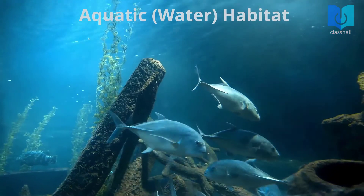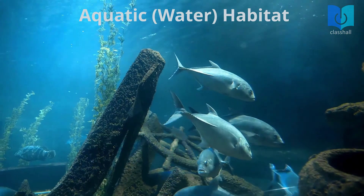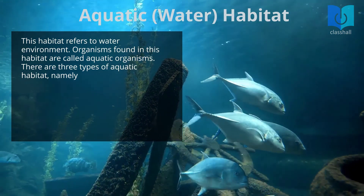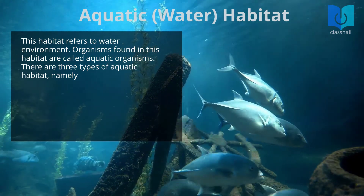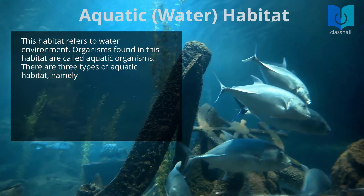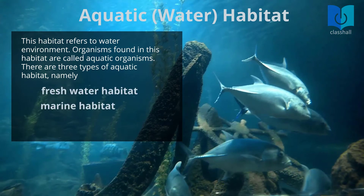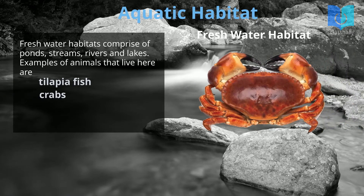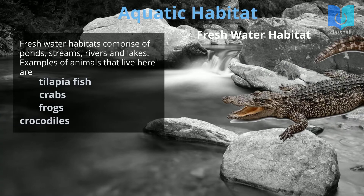One: aquatic or water habitat. This habitat refers to a water environment. Organisms found in this habitat are called aquatic organisms. There are three types of aquatic habitat: freshwater habitat, marine habitat, and estuarine habitat. Freshwater habitats comprise ponds, streams, rivers, and lakes. Examples of animals that live here are tilapia fish, crabs, frogs, and crocodiles.